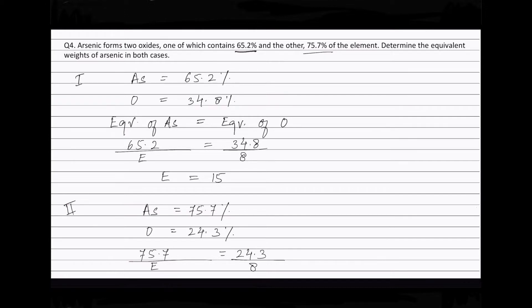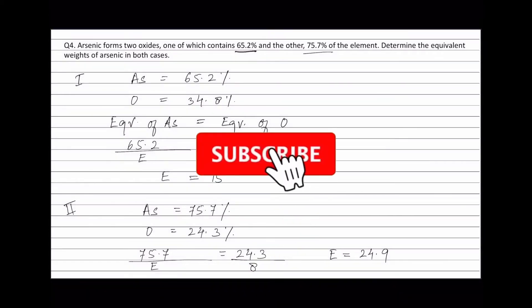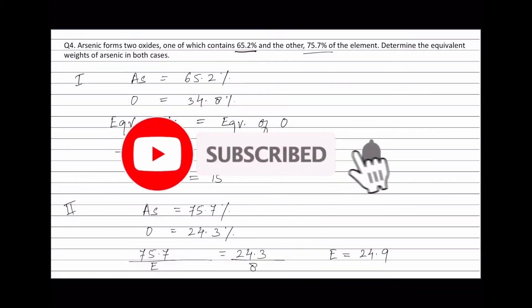Solving this equation, we get the equivalent weight of arsenic in this second oxide equals 24.9.